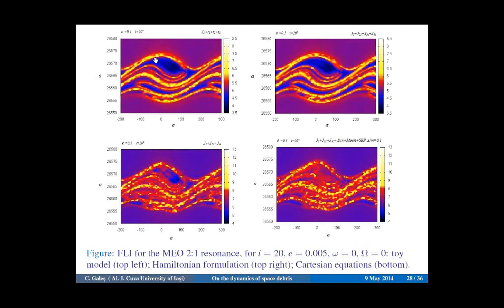We validated this result from the toy model by integrating the Hamiltonian equations considering perturbations from harmonics up to degree 4, and further validated these results by integrating the Cartesian equations. In conclusion, in the case of the 2-to-1 resonance, as long as one of the three terms is dominant and the other two are small in magnitude, we have a pendulum-like plot. Otherwise, if at least two terms are comparable in magnitude, we get very complicated dynamics.